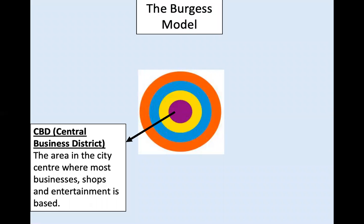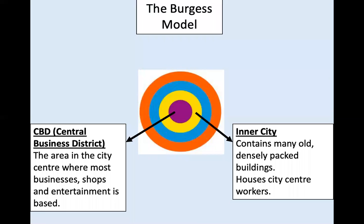The inner zone of the city is the CBD or the central business district. This is the area in the city centre where most businesses, shops and entertainment is based. The next zone out is the inner city, which contains usually many old, quite densely packed buildings and it houses city centre workers.